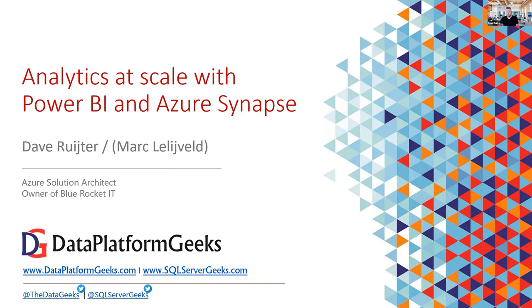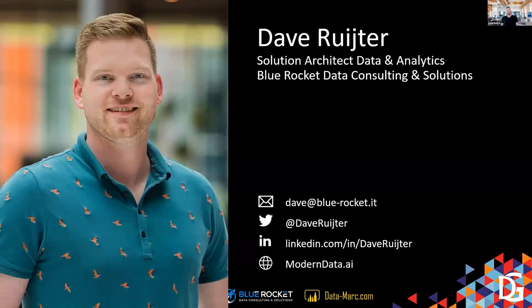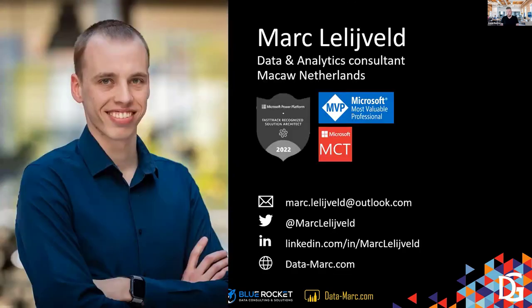A little bit about me: my name is Dave Reiter. I live in the Netherlands and I'm a solution architect for the data analytics world with around 15 years of experience. I worked with McCall, a consultancy firm in the Netherlands where Mark also works. A year ago I started my own firm called Blue Rocket Data Consulting. You can find me on LinkedIn, Twitter, and I have a blog at moderndata.ai. My friend Mark is also a consultant in data analytics — more of a Power BI expert than I am. You can find more about him at data-mark.com.